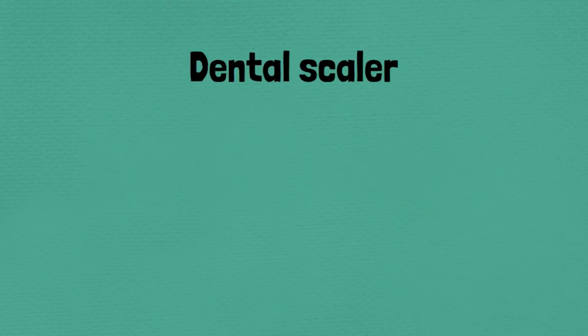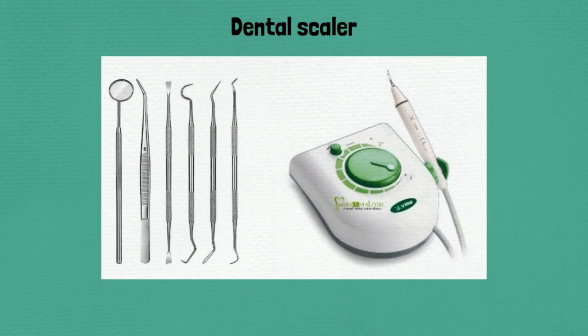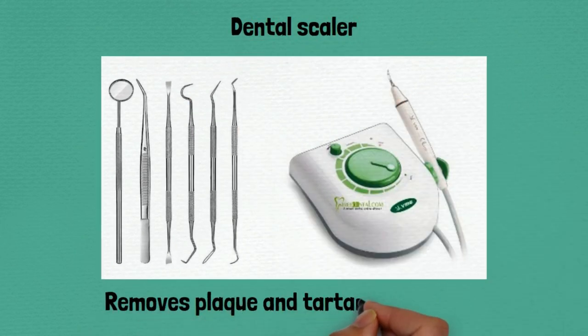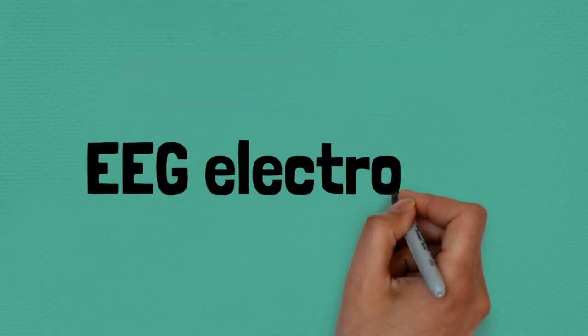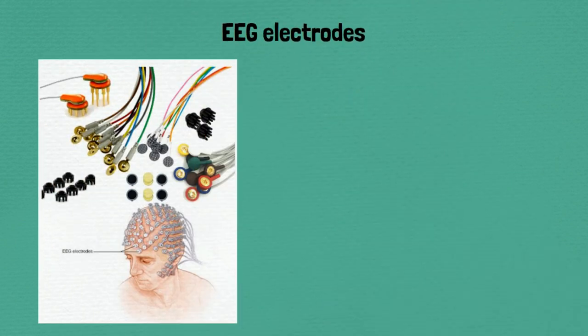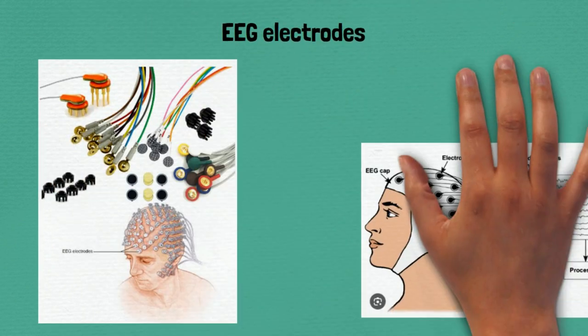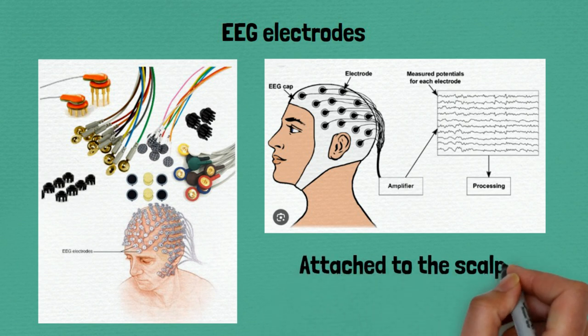Ninety-six: dental scaler, removes plaque and tartar from teeth. Ninety-seven: EEG electrodes, attached to the scalp to record brain activity.